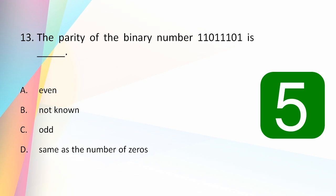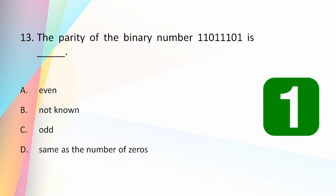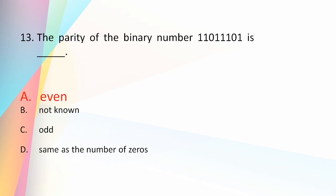The parity of the binary number 110111011101 is: even, odd, not known, or same as the number of zeros? The answer is even. Parity of a binary number is even when the number of ones present is even. Here we count 6 ones, which is even, so the given binary number has even parity.